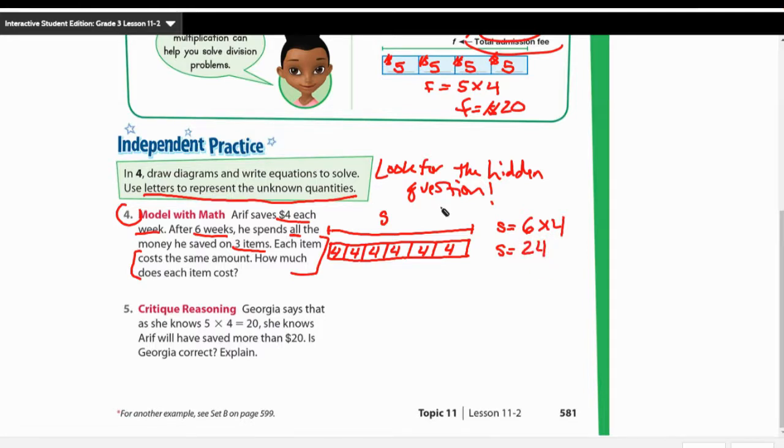So now we know that Arif has $24. He saved $24. But we also know that he spent all of it on three items. So now we have, we're going to go ahead and put 24 at the top because we know the amount. So we're going to draw out another bar diagram with three spaces in it, but we don't know how much they should be. And I'm going to use an I to represent the cost of each item.